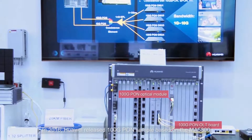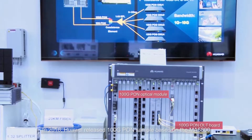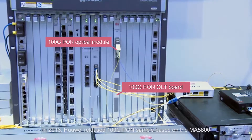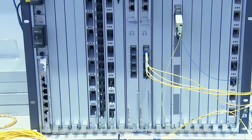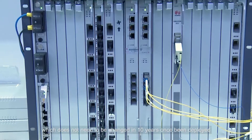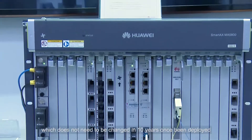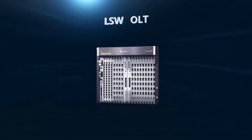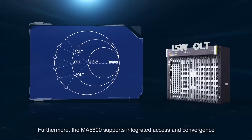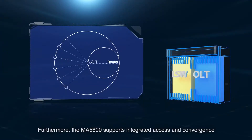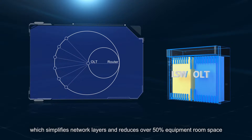In 2016, Huawei released a 100G G-PON sample based on the MA5800, which does not need to be changed in 10 years once deployed. Furthermore, the MA5800 supports integrated access and convergence, which simplifies network layers and reduces over 50% of equipment room space.